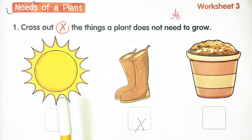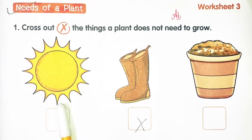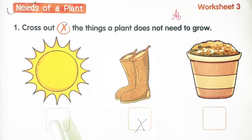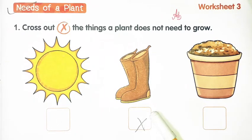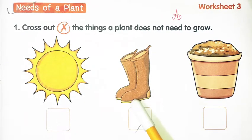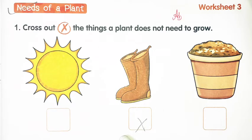First is sun. A plant needs sunlight to grow, so we will keep it. Next is shoes. A plant does not need shoes to grow.